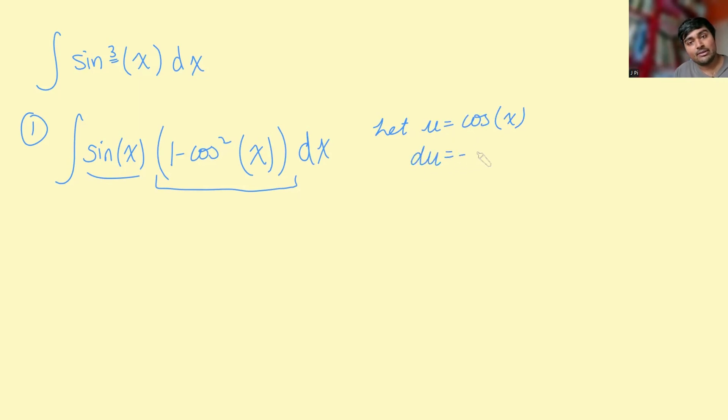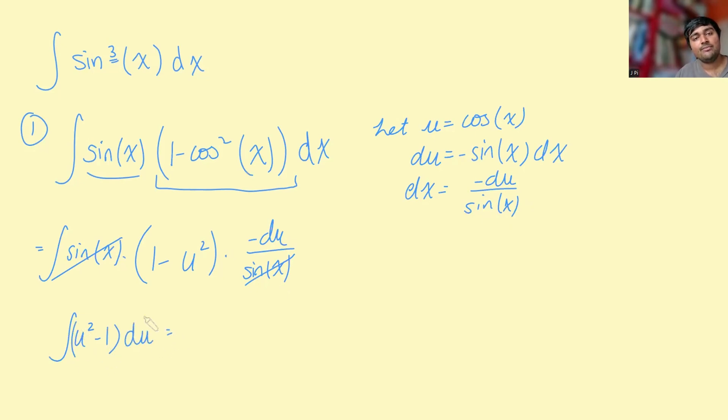And so therefore du is minus sine x dx. And therefore, if I rearrange this, dx is going to be minus du over sine x. Now bringing this into the integral here, this is the integral of sine x times one minus cos squared x is just u squared, times dx, which is minus du over sine x. And the beauty of this is those sine x's cancel. And this minus I can bring in here, this is just the integral of u squared minus one du, which is a very standard integral.